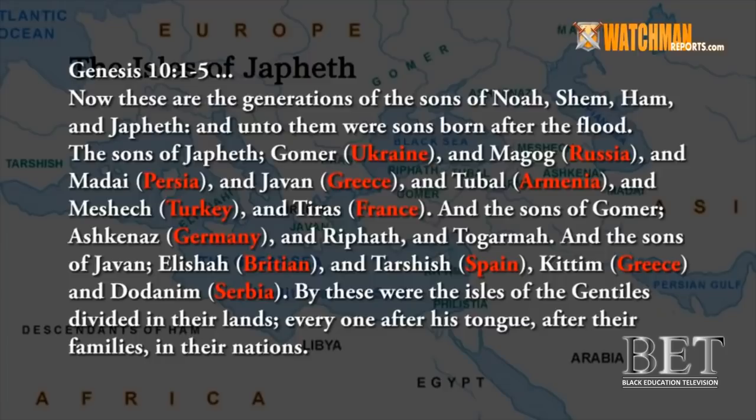The sons of Japheth: Gomer, and Magog, and Madi, and Javan, and Tubal, and Meshech, and Tyrus. And the sons of Gomer: Ashkenaz, and Riphath, and Togarmah. And the sons of Javan: Elisha, and Tarshish, Kittim, and Dodinim. By these were the isles of the Gentiles divided into their lands, every one after his tongue, after their families, in their nations.